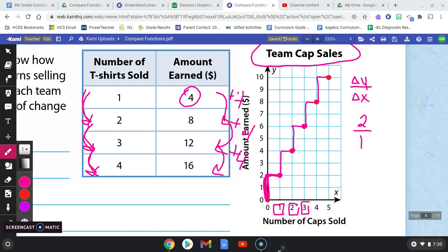What about between the next two ordered pairs? So now I'll do it in purple. What is this vertical change? That's a positive 2. What's this horizontal change? Positive 1.